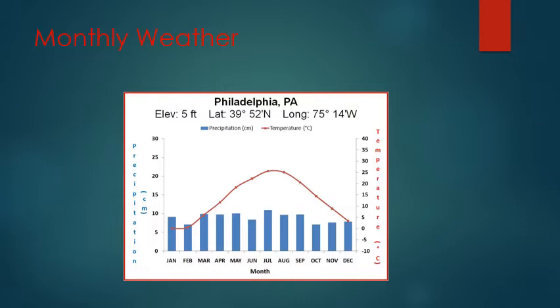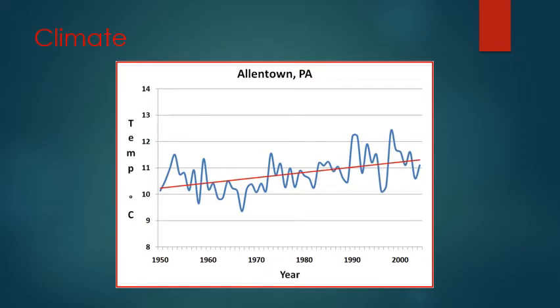Looking at the monthly weather for Philadelphia, we can see temperature versus precipitation and get an average of what weather looks like. When we look at climate, we use a much longer scale — here's Allentown, Pennsylvania, with temperature ranging from 1950 to today. It's up and down, all over the place. But it's really helpful to add a trend line, which takes an average of data across time. We can see the trend is positively increasing over time, even though there's still a lot of variability.